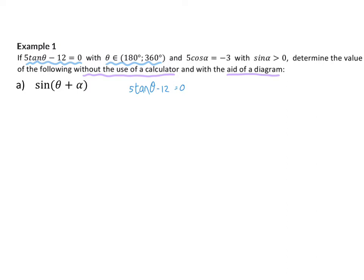Because we want to draw a triangle, we will need side lengths. Therefore, we need to get tan theta — the trig function — alone, so that we can have a ratio to use for the side lengths. To get tan theta alone, I'm going to add 12 and then divide by 5 on the other side. This ratio is clearly positive, meaning we work in the quadrants where tan is positive: the first and the third quadrant. Our second condition says theta is between 180 and 360 degrees, which eliminates the first quadrant. Therefore, we will draw our triangle in the third quadrant.